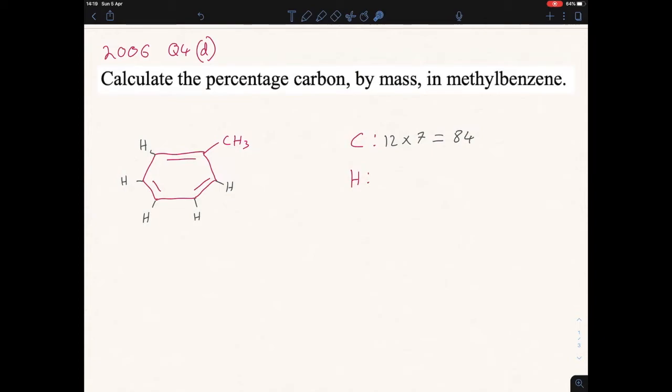So we have 1, 2, 3, 4, 5, 6, 7, 8 hydrogens in total. So hydrogen molecular mass is 1 times 8 there, obviously it will give us our 8. So 84 plus 8 is going to give you our 92. So your total mass of your methylbenzene is 92.